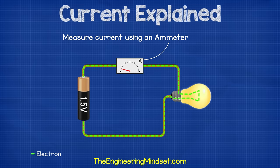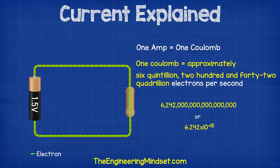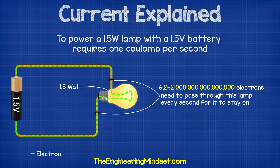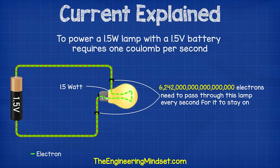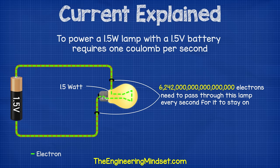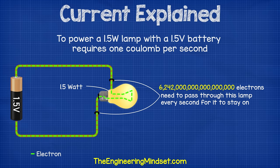We can measure this using an ammeter and we measure the flow of current in the circuit using the units of amps. So what is an amp? One amp is equal to one coulomb, and one coulomb is equal to approximately six quintillion two hundred and forty two quadrillion electrons per second. Another way to look at this is that to power a 1.5 watt lamp with a 1.5 volt battery, approximately six quintillion two hundred and forty two quadrillion electrons need to flow from the battery and through the lamp every second for the lamp to stay on.